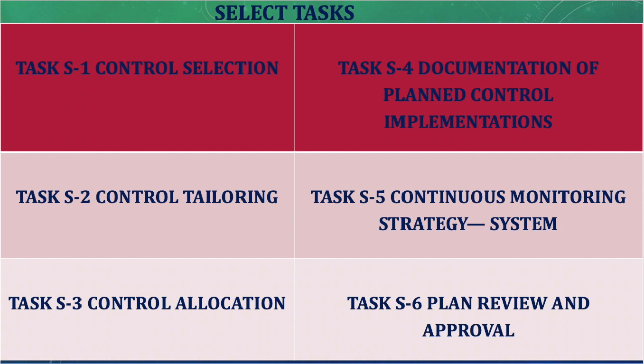Task 5 is the continuous monitoring strategy at the system level. This means we should incorporate a monitoring strategy to ensure that the controls we have implemented are effective. It is not enough to implement the control — it is equally important to implement a monitoring strategy to ensure the effectiveness of the control over time. Task 6 is plan review and approval, referring to the security and privacy plan, which is reviewed and approved at this step.